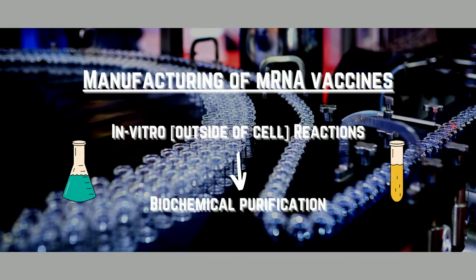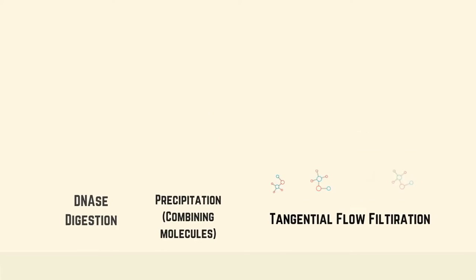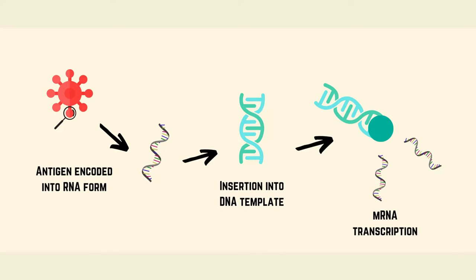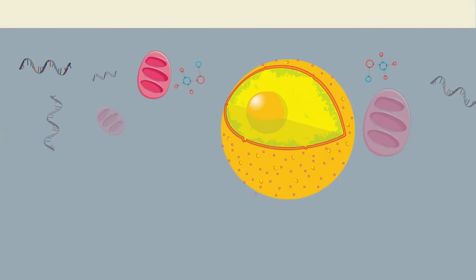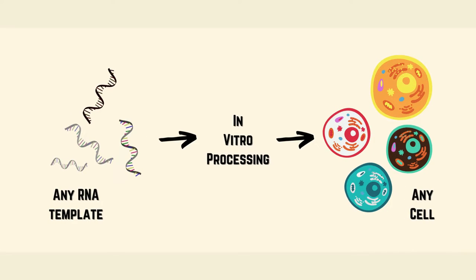Large-scale production of mRNA vaccines consists of a one- or two-step in vitro reaction, followed by a purification platform with multiple steps that can include DNA digestion, precipitation, chromatography, or tangential flow filtration. Construction of mRNA vaccines requires the insertion of the encoded antigen in a DNA template from where the mRNA is transcribed in vitro. Unlike DNA, mRNA only needs to reach the cytosol where it will be translated into the antigen in vivo using the cell machinery. This way, any desired sequence can be designed, produced in vitro, and delivered to any type of cell.